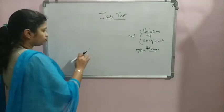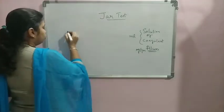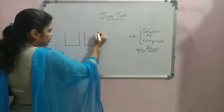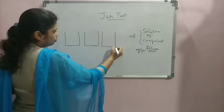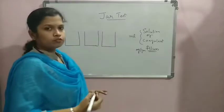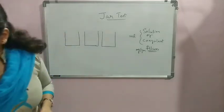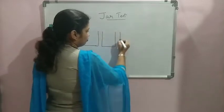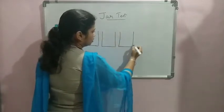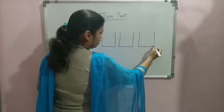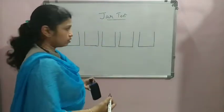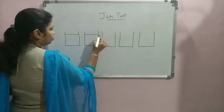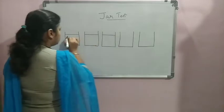How is the test setup done? In this case, first of all jars of around one liter capacity will be taken. Generally six such jars will be taken. In these jars we will be adding the water, which may be raw water or any water which you have taken for the test.